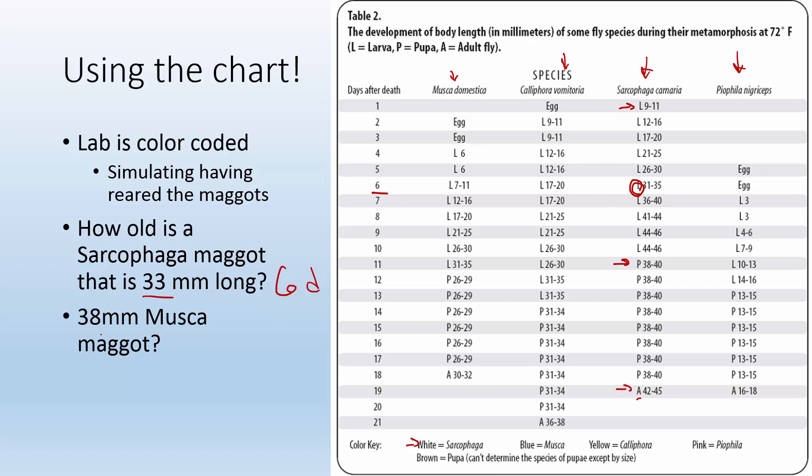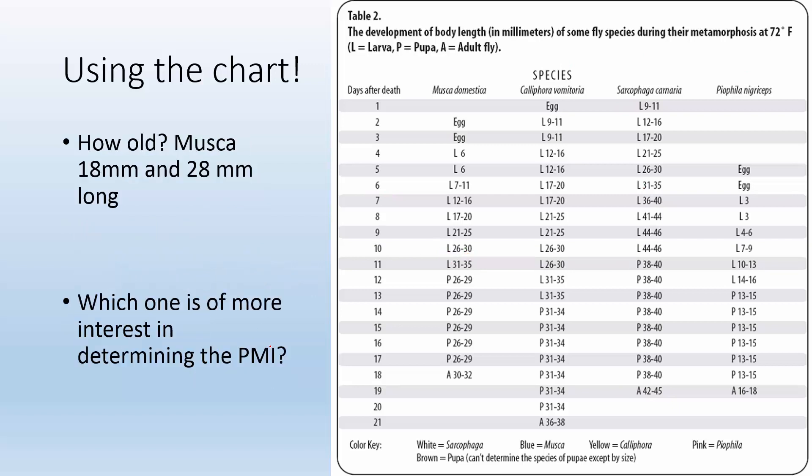What if it was a 38 millimeter long musca maggot? So I find musca, I find 38 millimeters, where would that fall? Where do you go? 38 millimeters isn't even on here. So let's say 38, let's say it was 30. 30 millimeter long musca would be probably right here, right, the 30, and that would be about 10 days. Right, pretty straightforward, not so bad.